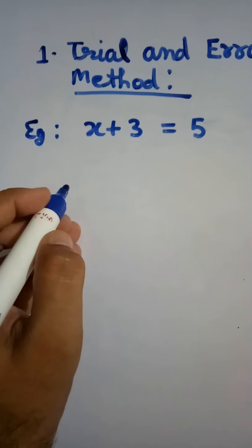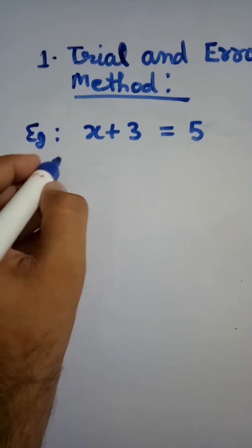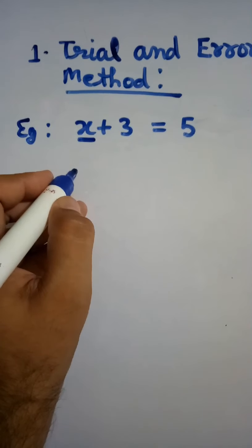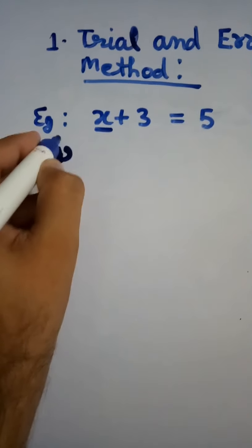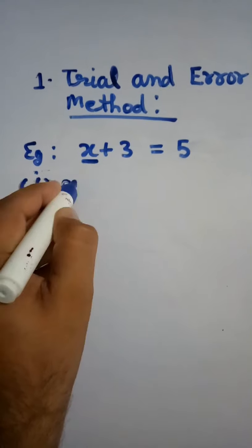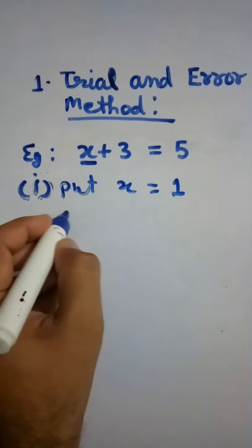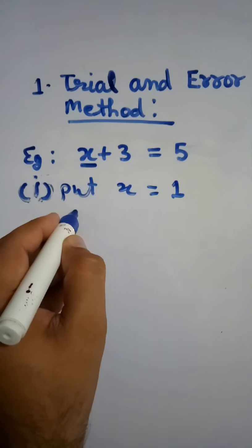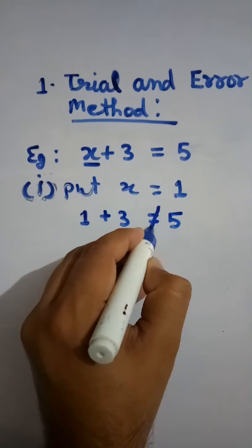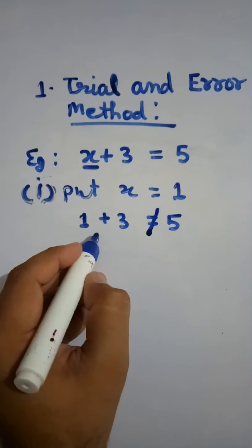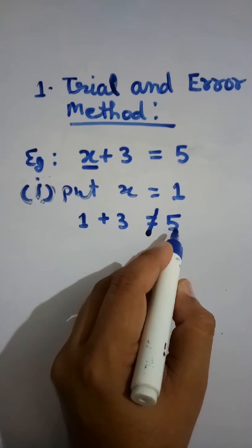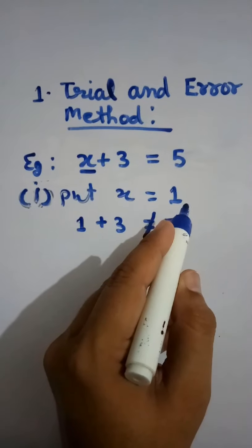Here the example is: x plus 3 is equal to 5. We replace the variable x with a numerical value. First, put x equal to 1. LHS: 1 plus 3 equals 4, but RHS is 5. LHS is not equal to RHS, so x equal to 1 is not a solution.